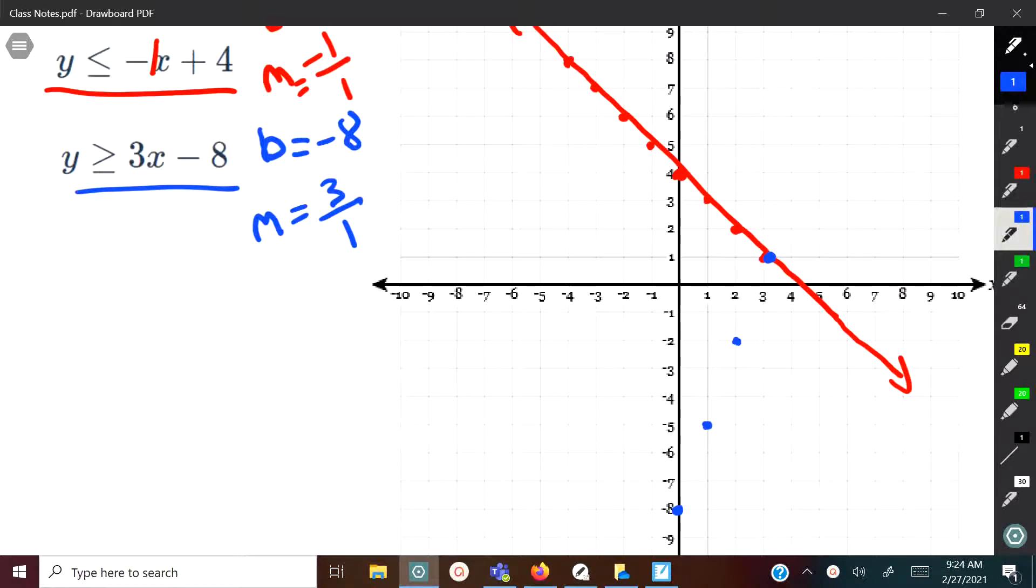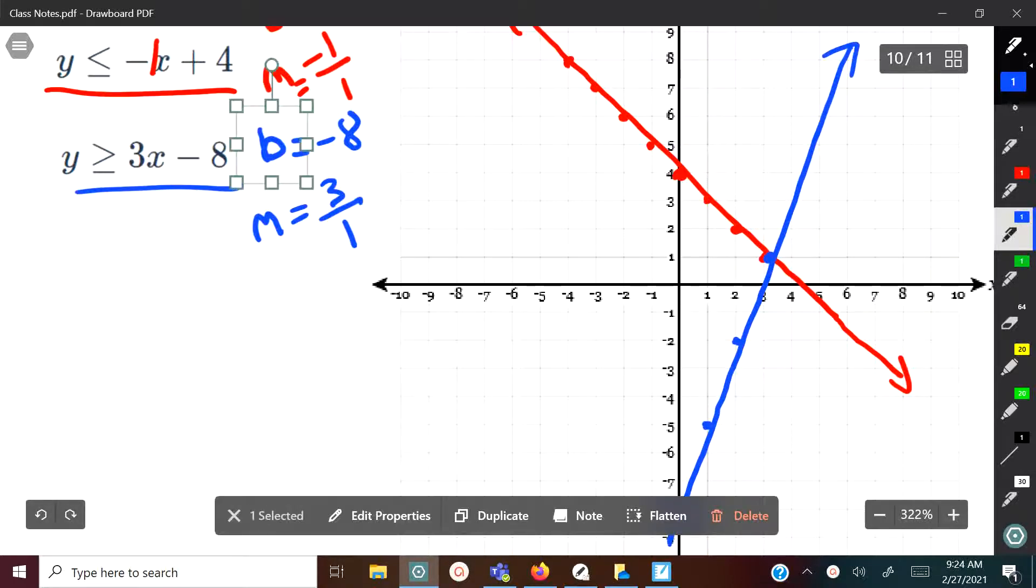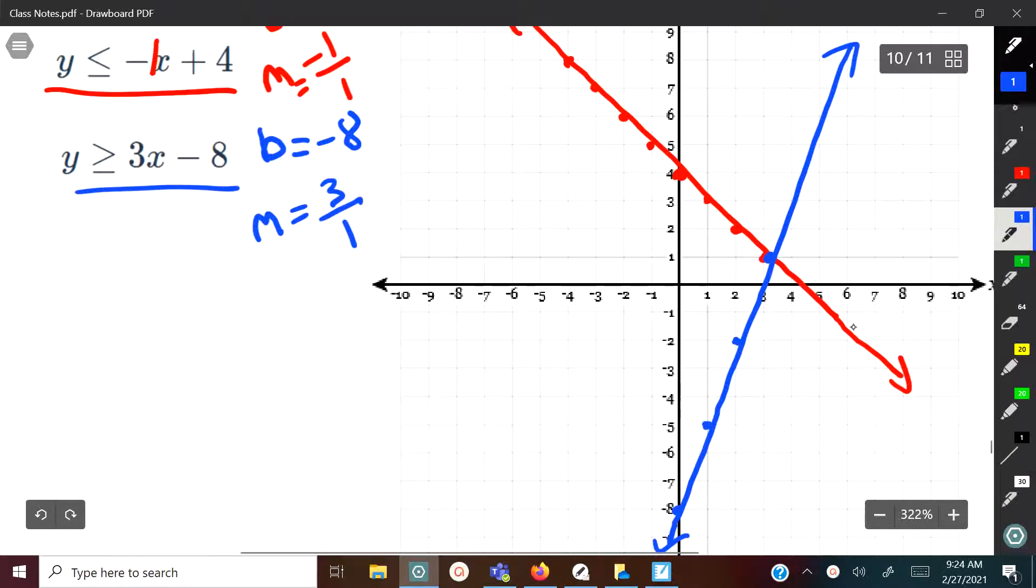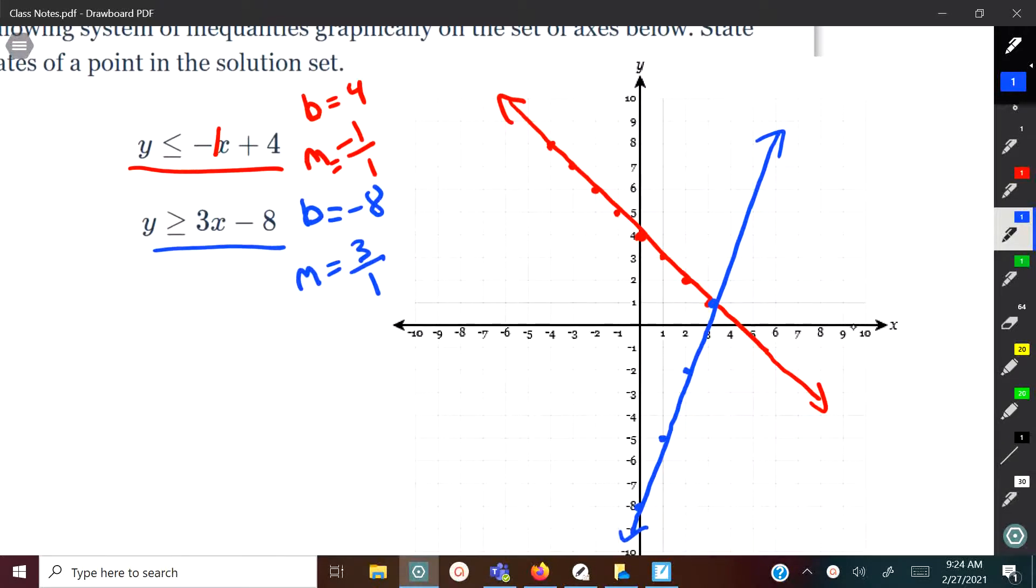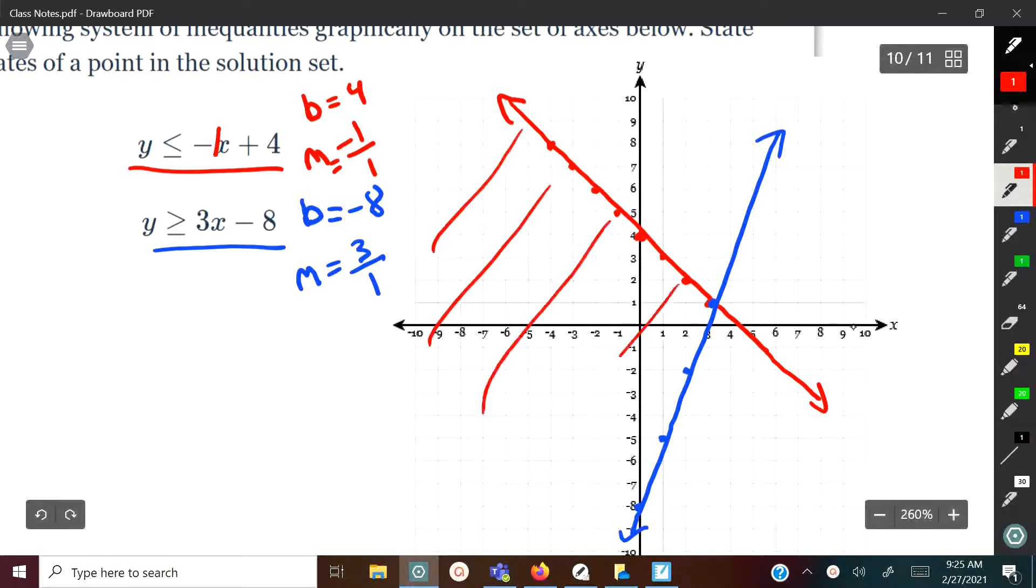Now, this one is equal to, so it has a solid line. So now we've got both of them graphed as far as the border there. Now, the other part is, do you shade above or below? Well, with this first one here, and the reason I did it one at a time is that way you can see where to graph the other one. So the first one here is, we're going to shade below because it's less than. So we shade down this way.